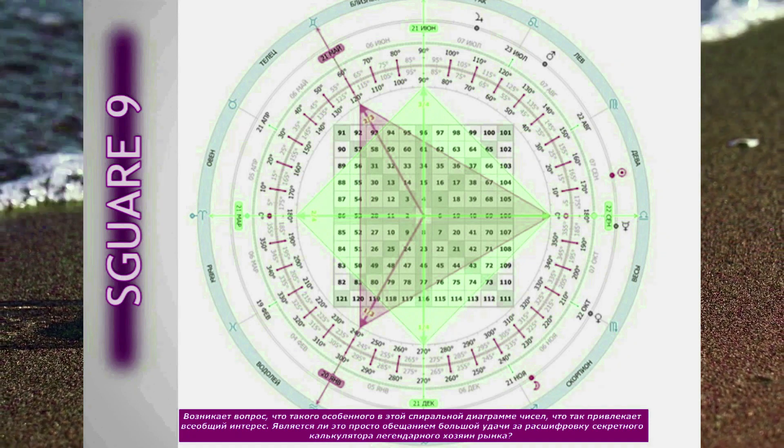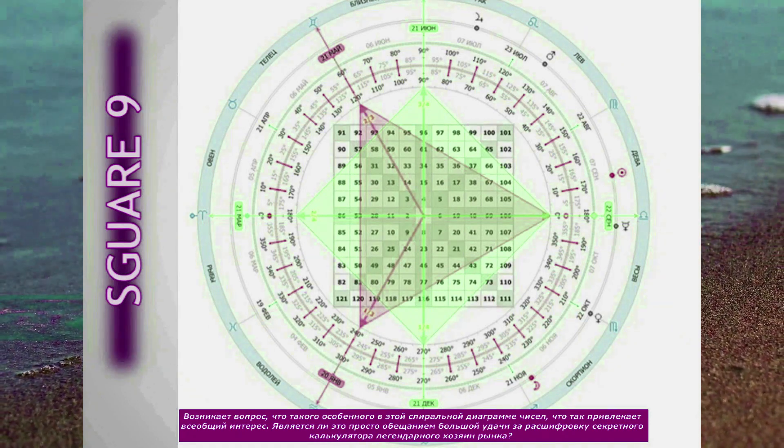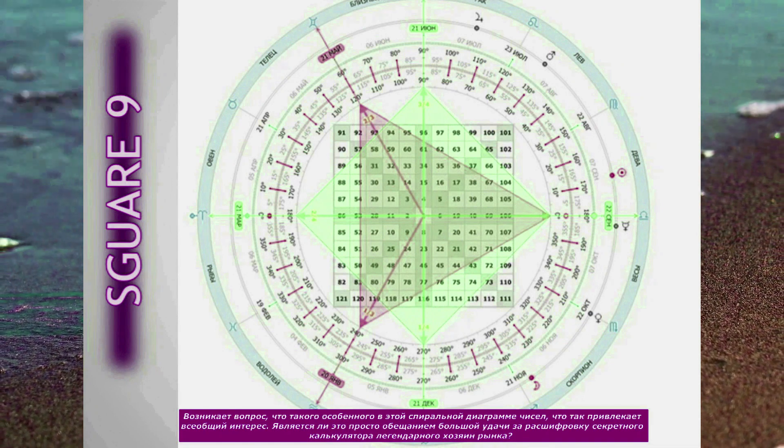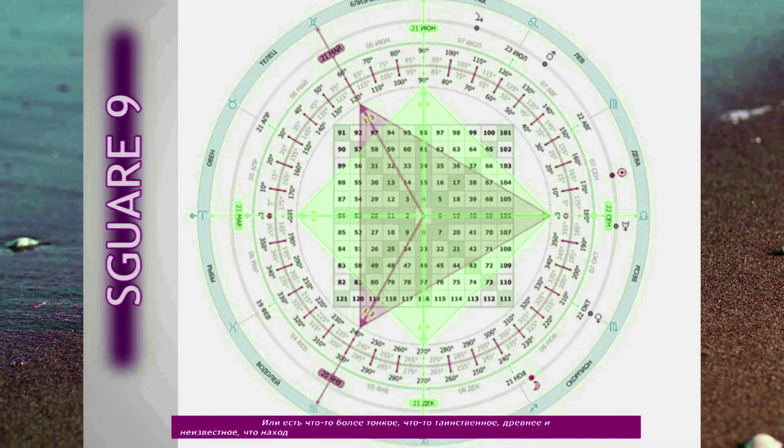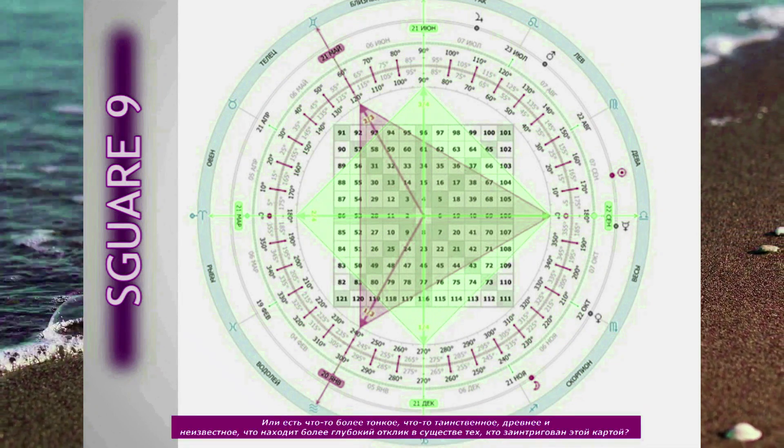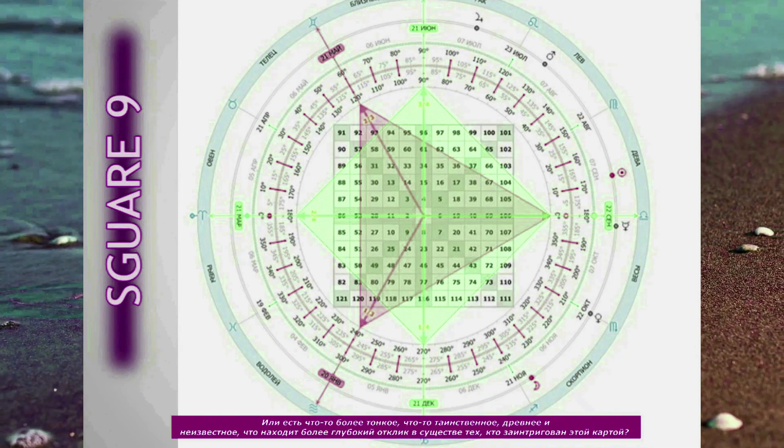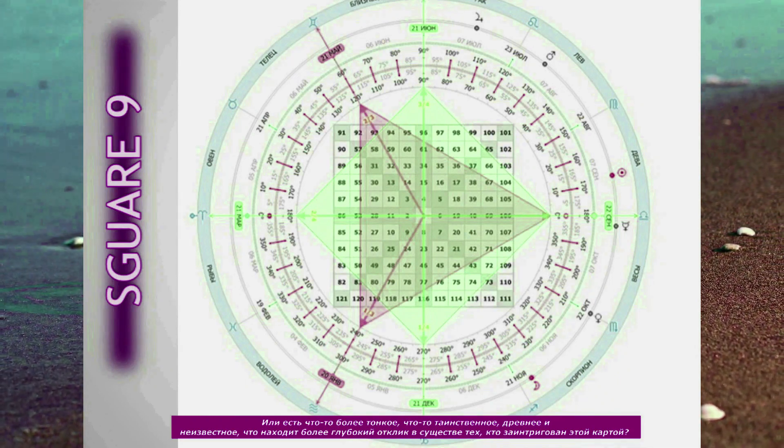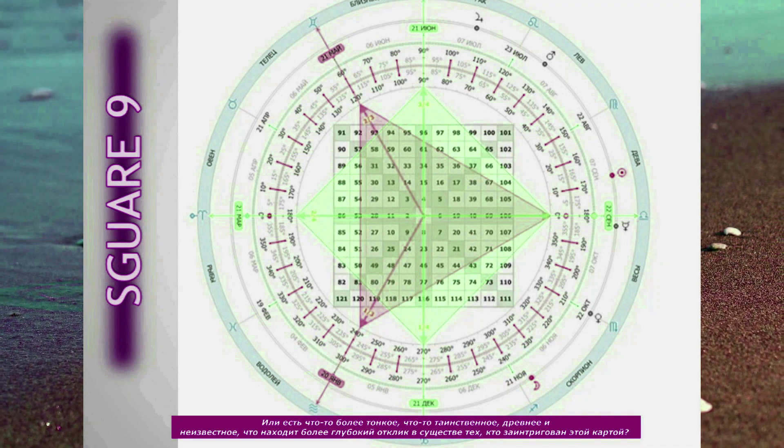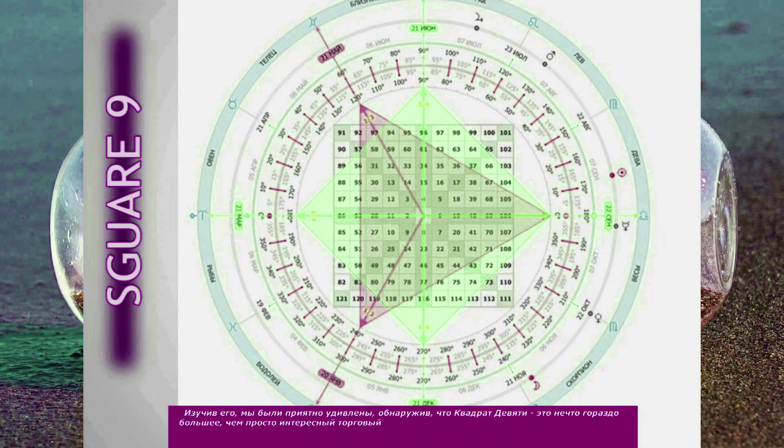Is it simply the promise of great fortune for decoding the secret calculator of a legendary market master? Or is there something more subtle, something mysterious, ancient, and unknown that resonates deeper in the being of those intrigued by this chart?